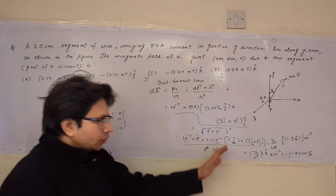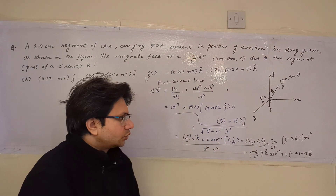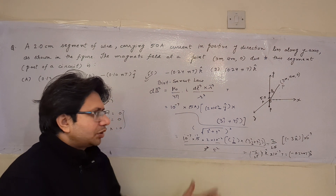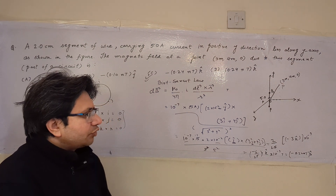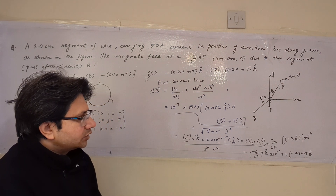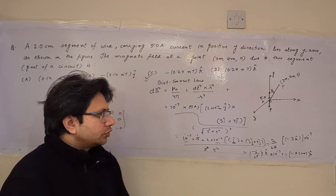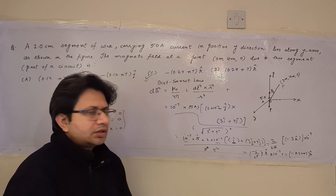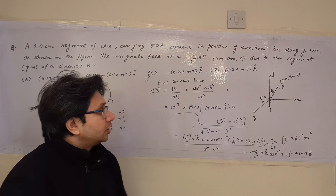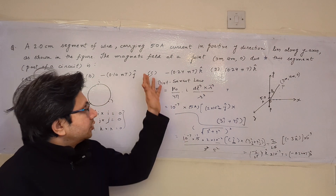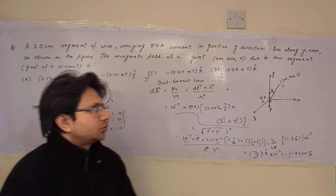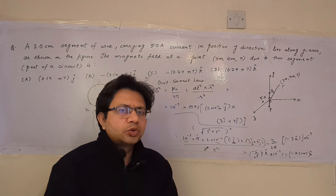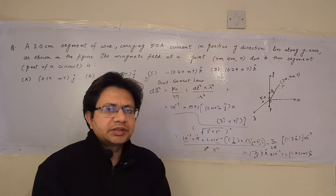This is what we have solved using vector rules and simple mathematics. The final result is −0.24 nanotesla k̂, so option C is the correct option. Hope you understand the explanation. Thank you.